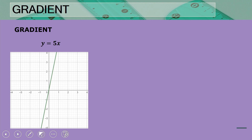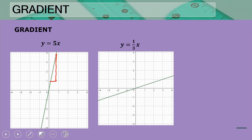Then we have a gradient of five. Because five is a high number, the line is very steep. Comparing it with the line that had a gradient of one third, we can see that the one third line is very gentle and less steep, and the difference between them is quite clear.